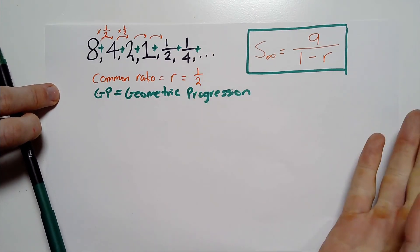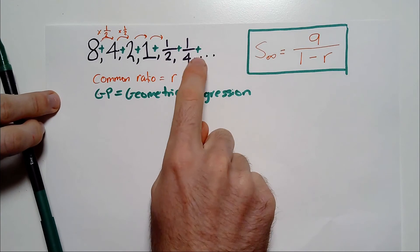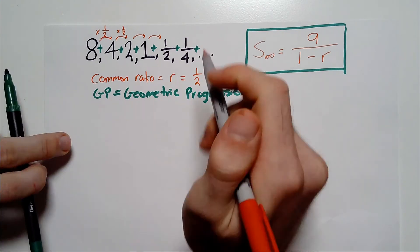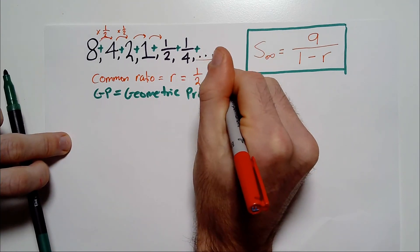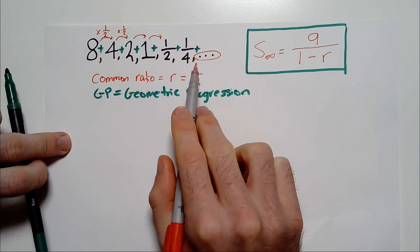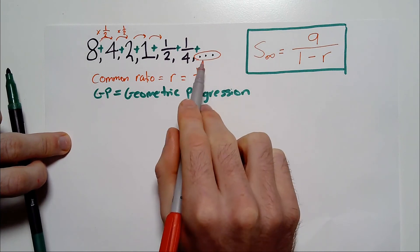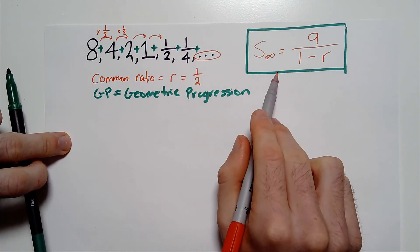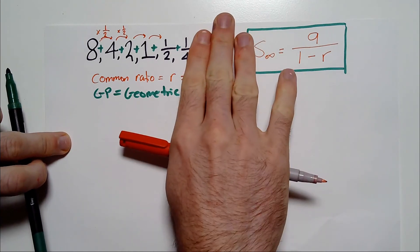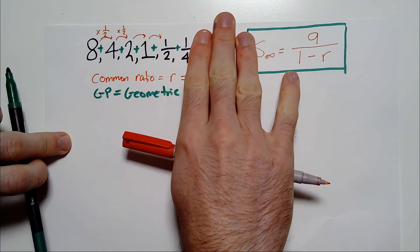And obviously, we're not going to write the numbers forever. So look for that dot, dot, dot. It's very important. If you don't have the dot, dot, dot, if you don't have the sequence continuing forever, then this formula will not be relevant, and you will just have a simple geometric progression with so many terms.